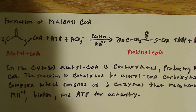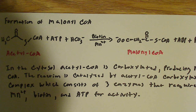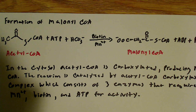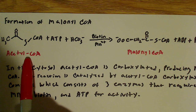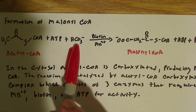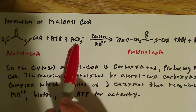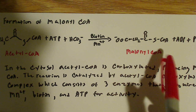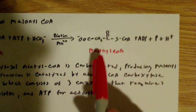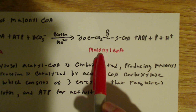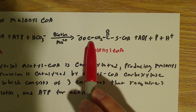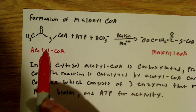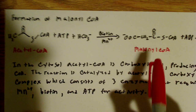In layman's terms, you're taking acetyl-CoA and you're using an activated CO2 group from a bicarbonate ion, and with energy you're essentially forming malonyl-CoA. All you're doing is carboxylating acetyl-CoA to form malonyl-CoA.